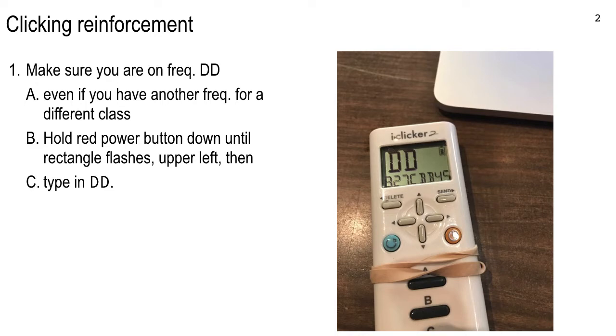To get the frequency set, you hold the red power button down until the rectangle flashes in the upper left. And then you just type in DD. Our frequency is set to DD, delta delta. And then you'll get a check mark. On exam days, it'll say go for SPP, I think it says, because it's a slightly different system.